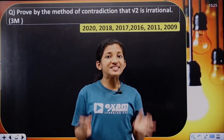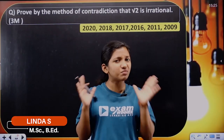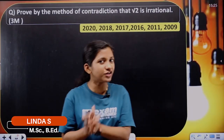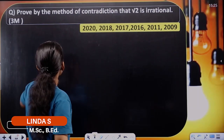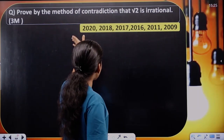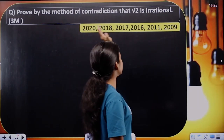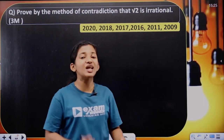Hi friends! In the chapter of Mathematical Reasoning, we have a share question. The third question is: Prove by the method of contradiction that Root 2 is irrational.